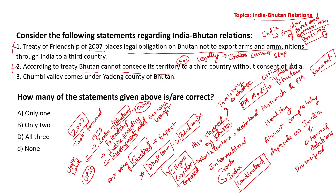Third statement: Chumbi Valley comes under Yangdong county of Bhutan. This is also incorrect — Yangdong county does not belong to Bhutan, it belongs to Tibet, the Tibet province of China. So all three statements are incorrect and hence our answer will be D.